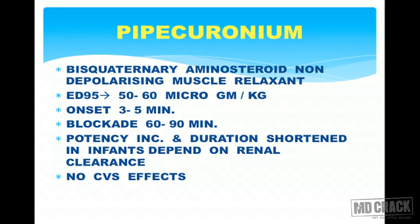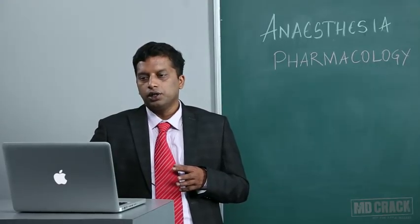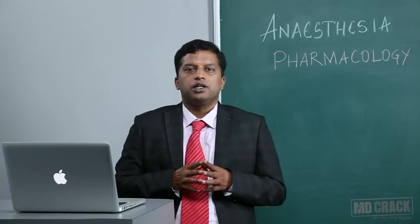Pipecuronium is a bisquaternary aminosteroid non-depolarizing muscle relaxant. Its ED95 is around 50 to 60 micrograms per kg, onset of action is 3 to 5 minutes, and duration of action is 60 to 90 minutes. Potency increases and duration is shortened in infants depending on renal clearance. There are no cardiovascular side effects as there is no histamine release with pipecuronium.